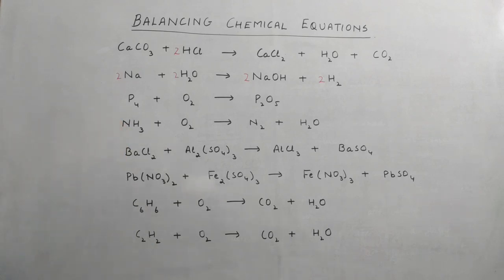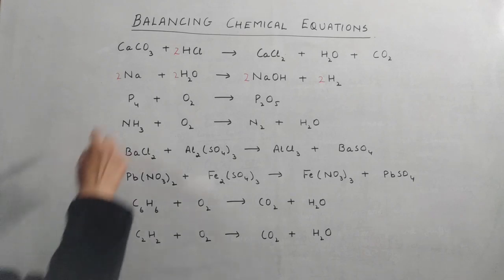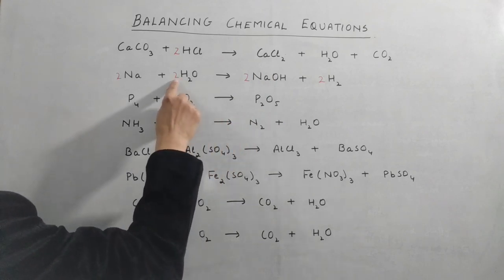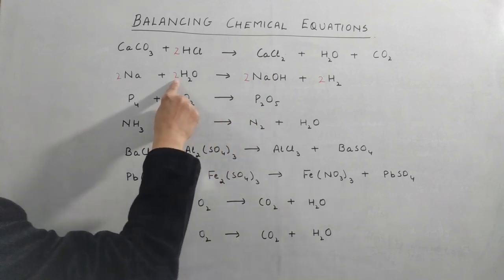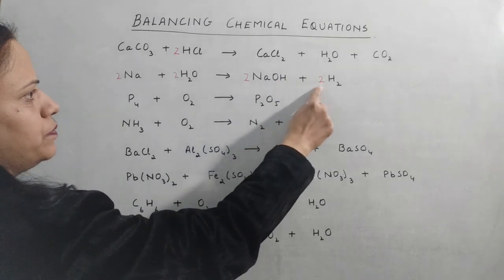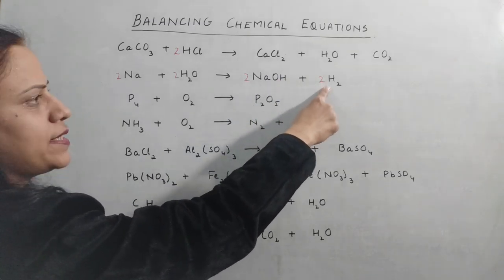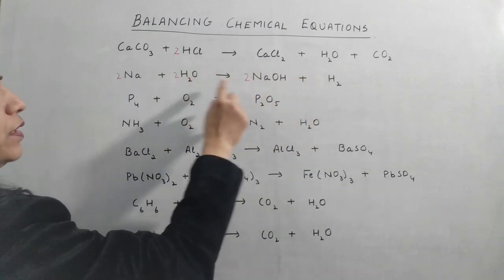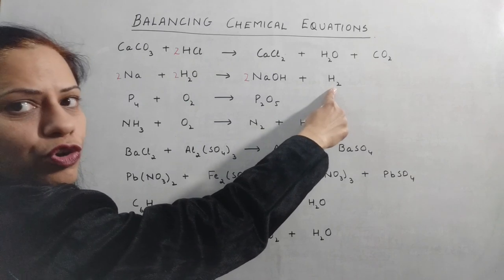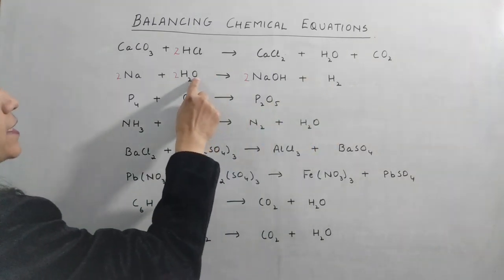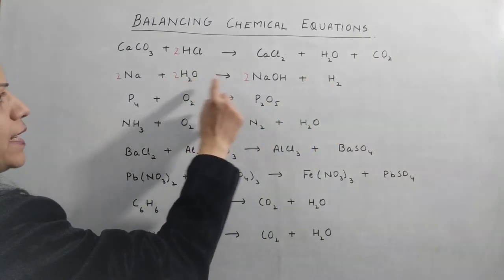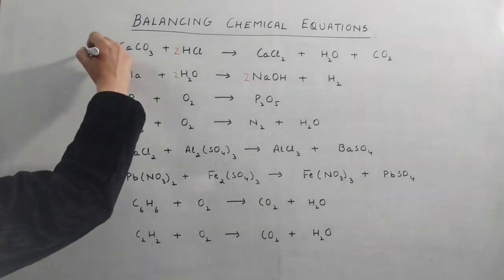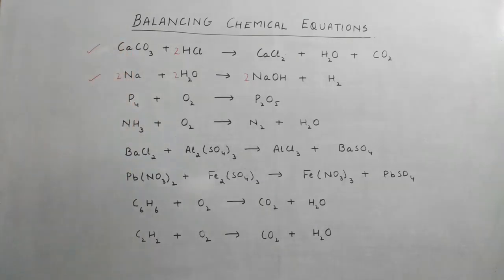After multiplying by two, we recheck: two atoms of sodium on each side — balanced. Hydrogen becomes four on one side; we adjust to make it four on both sides. Oxygen has two atoms on the left and two on the right — balanced. So our second equation is also balanced.